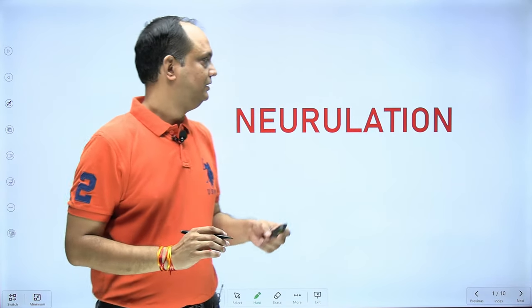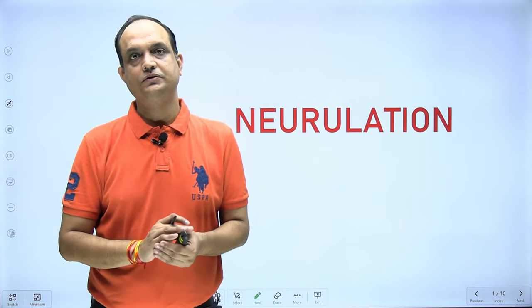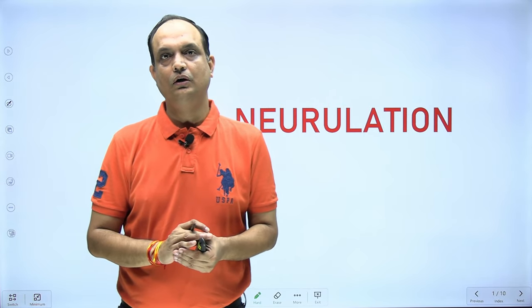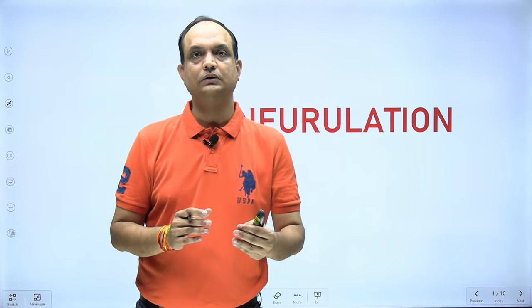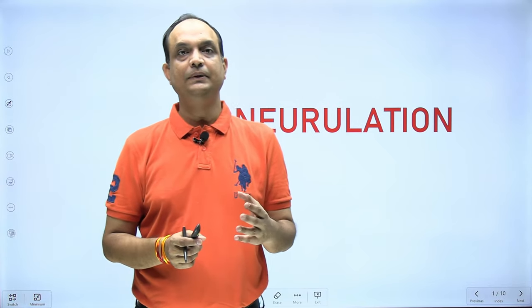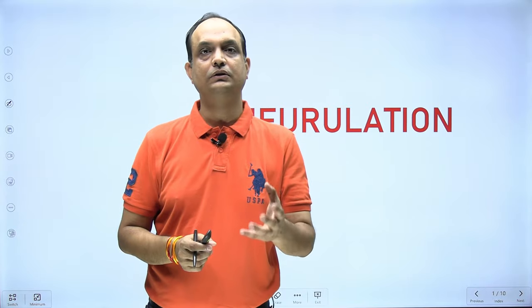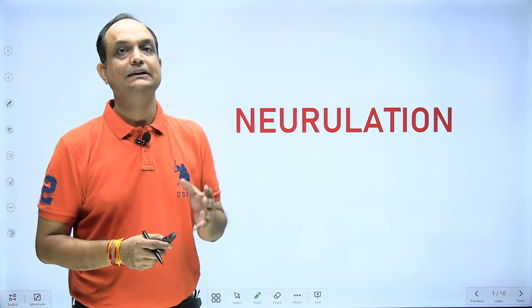Hello students, today we will discuss neurulation. When there is formation of the notochord, it acts as an inducer — it induces the overlying ectodermal cells to change their behavior, and that behavior is required for the formation of our central nervous system. This process is known as neurulation.